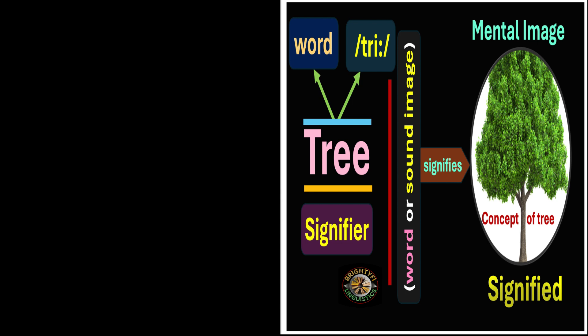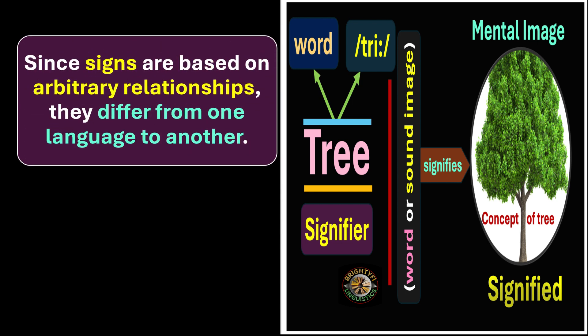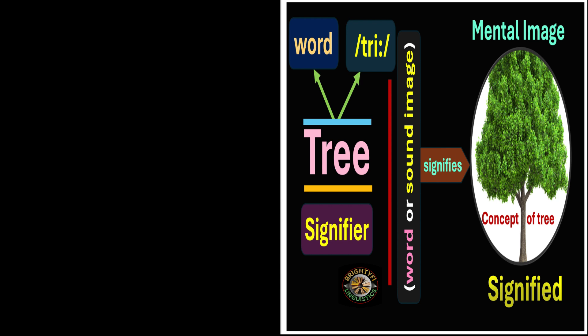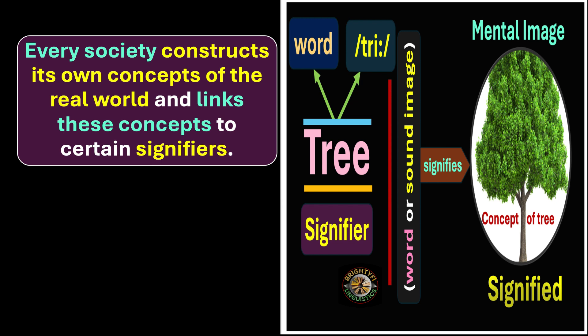Since signs are based on arbitrary relationships, they differ from one language to another. Concepts about the signified — the object or mental image — differ from one language to another. Every society constructs its own concepts of the real world and links these concepts to certain signifiers. For example, this particular image — the picture of the tree — in English we call it 'tree,' in Arabic we call it 'Shajar,' in Urdu we call it 'Darakht,' in Hindi we call it 'Vriksj.' The picture is the same, but the signifiers — the words — are different.